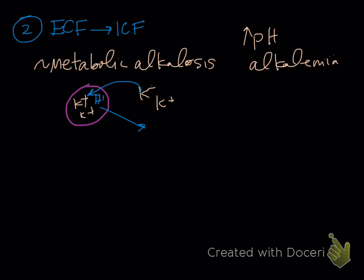The other time you can see it is if you give an animal insulin or glucose, which causes a shift of potassium into the cell.